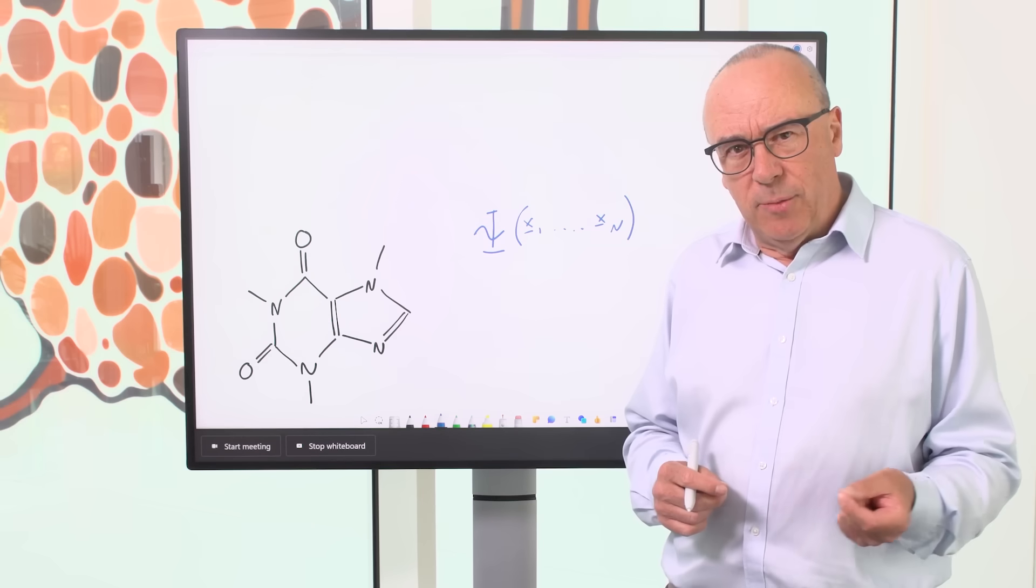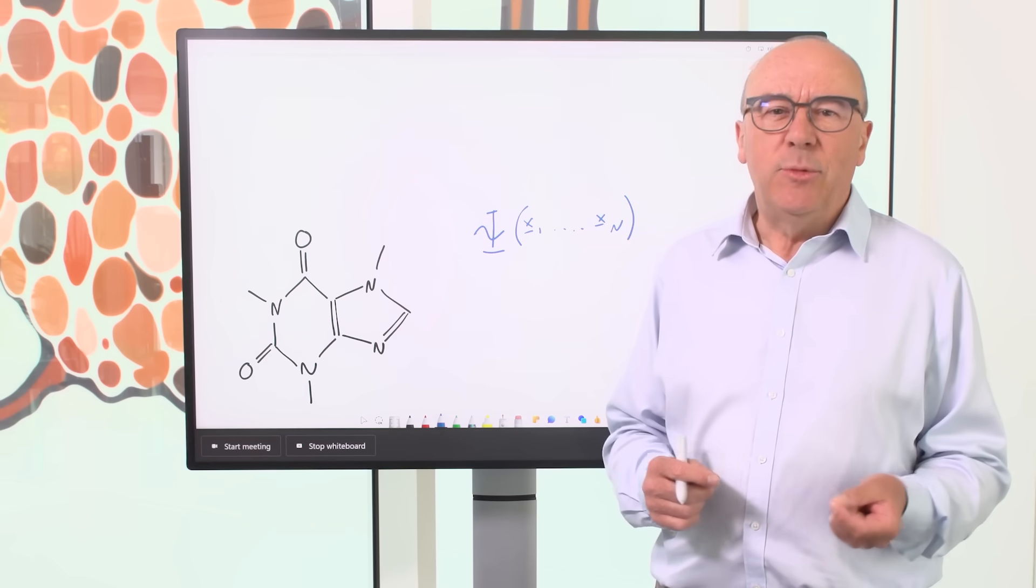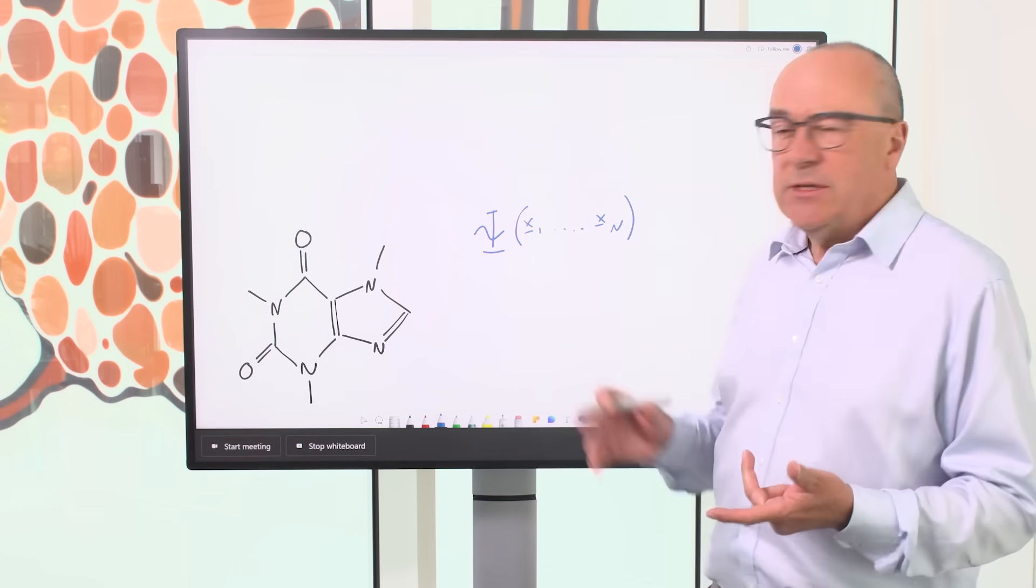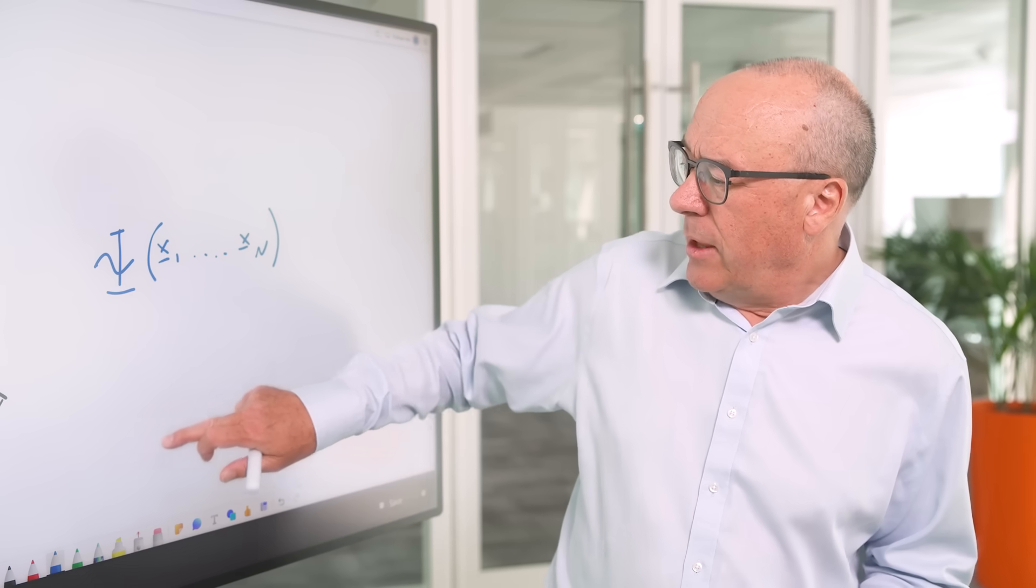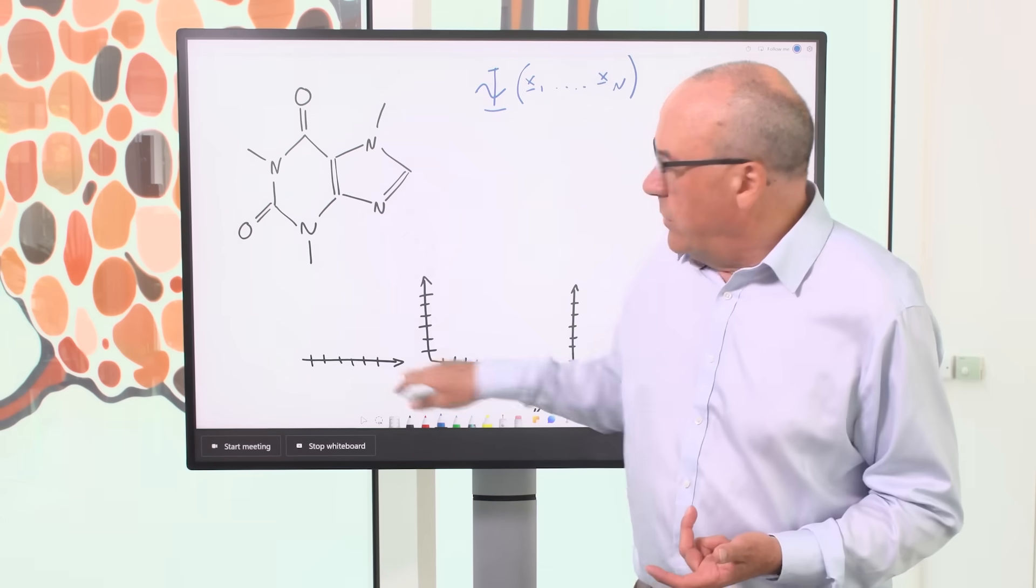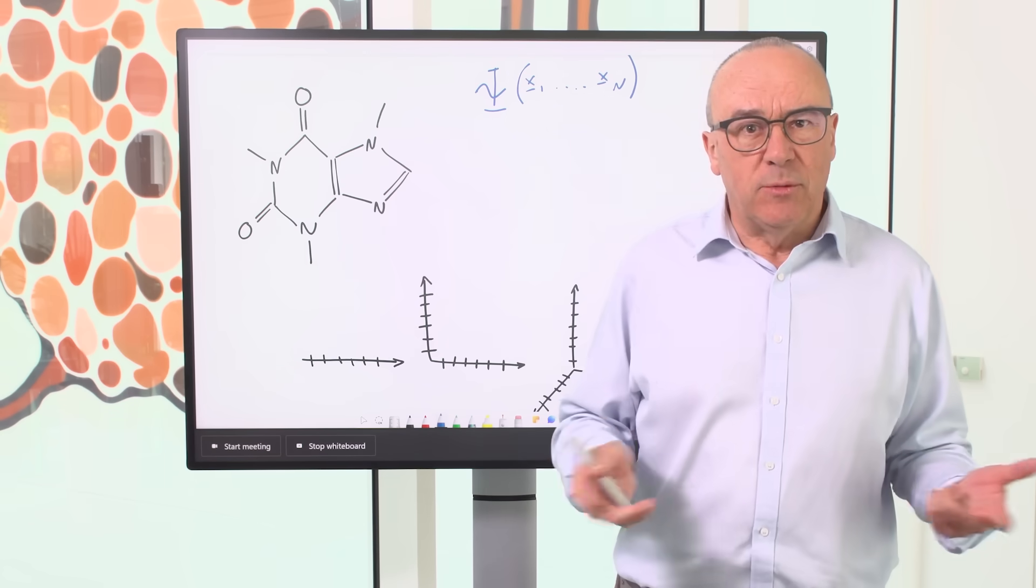Now, to see why that's a problem, let's imagine that we try to solve Schrödinger's equation by dividing this space up into a grid. Well, if this space had one dimension, and we divide it up into a thousand points, that would be easy.